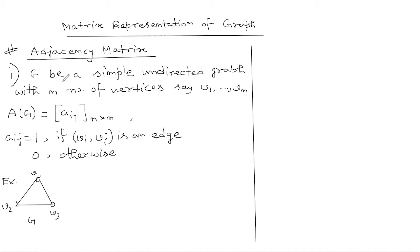Firstly I'll take a simple undirected graph with n number of vertices v1, v2, ..., vn. For this kind of graph, the adjacency matrix is defined as a matrix of order n cross n whose entries are given by aij, which is equal to 1 if the vertices vi and vj are adjacent — that means there is an edge connecting vi and vj — and otherwise it is 0. In this matrix, each row is associated with a fixed vertex.